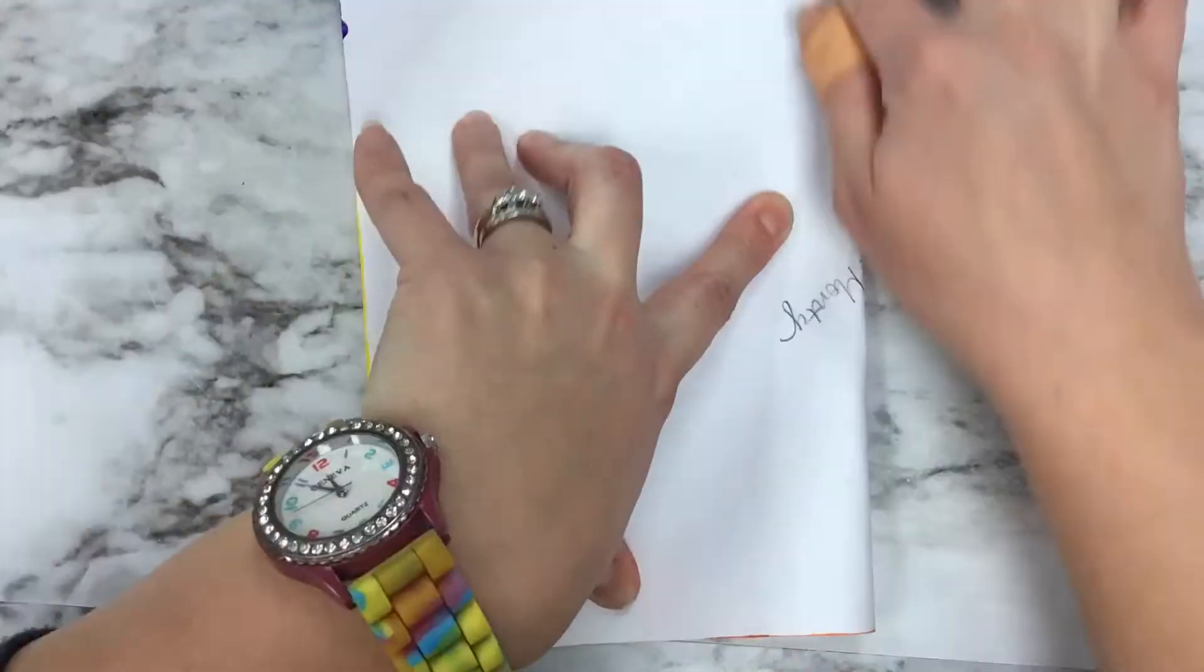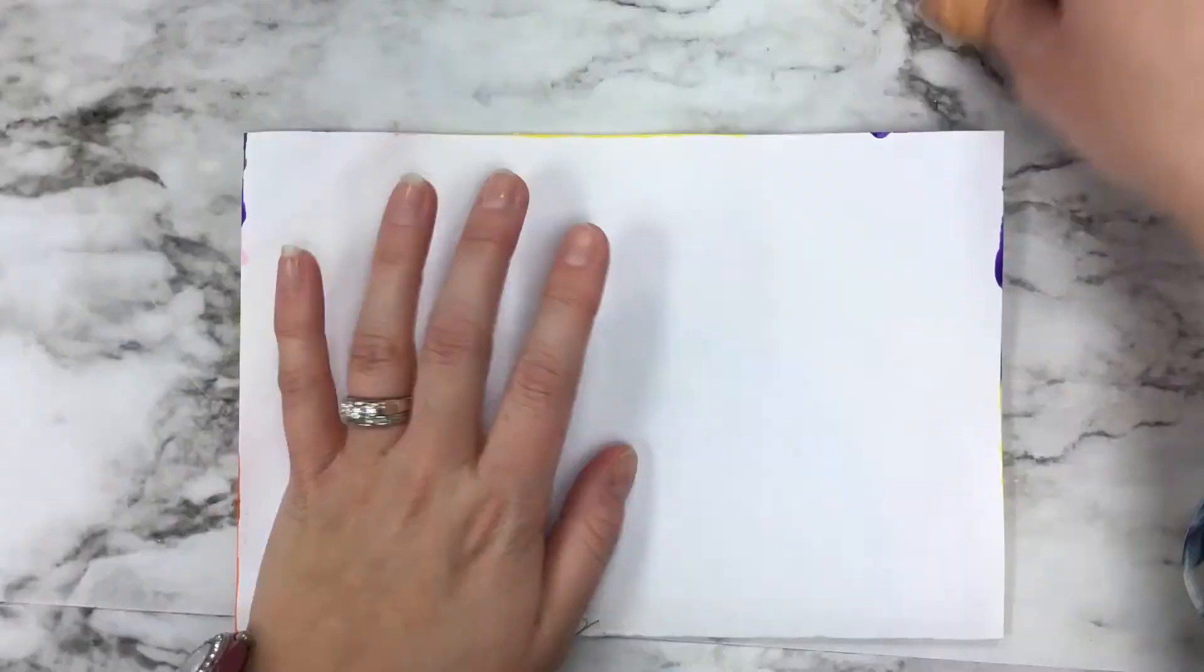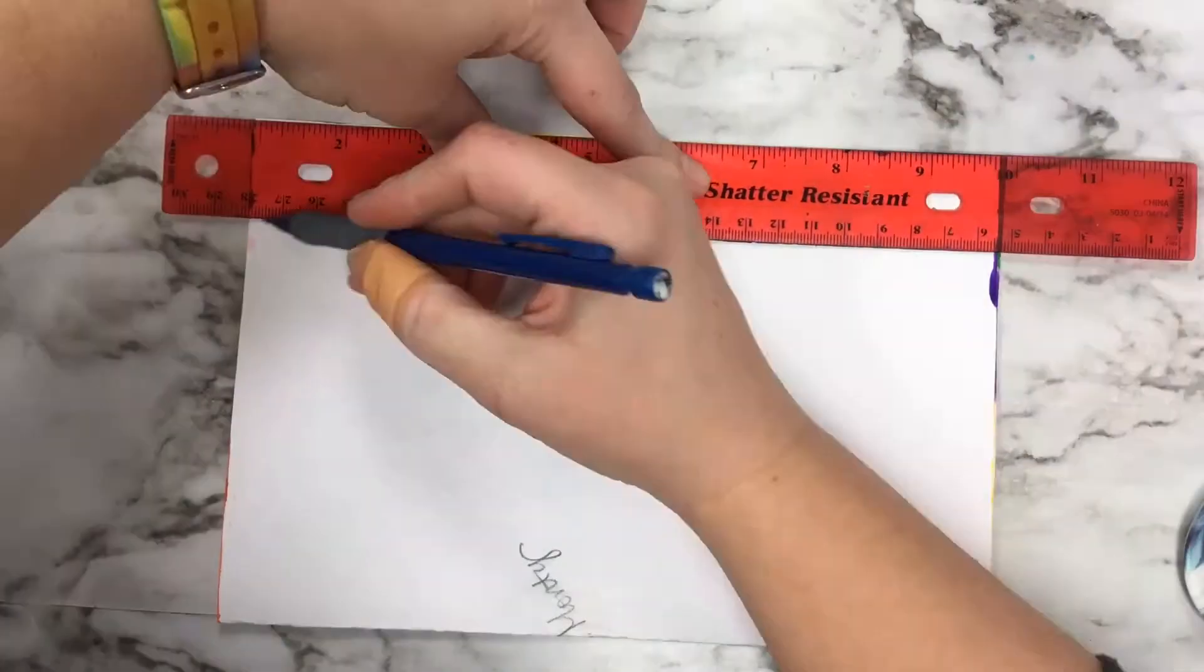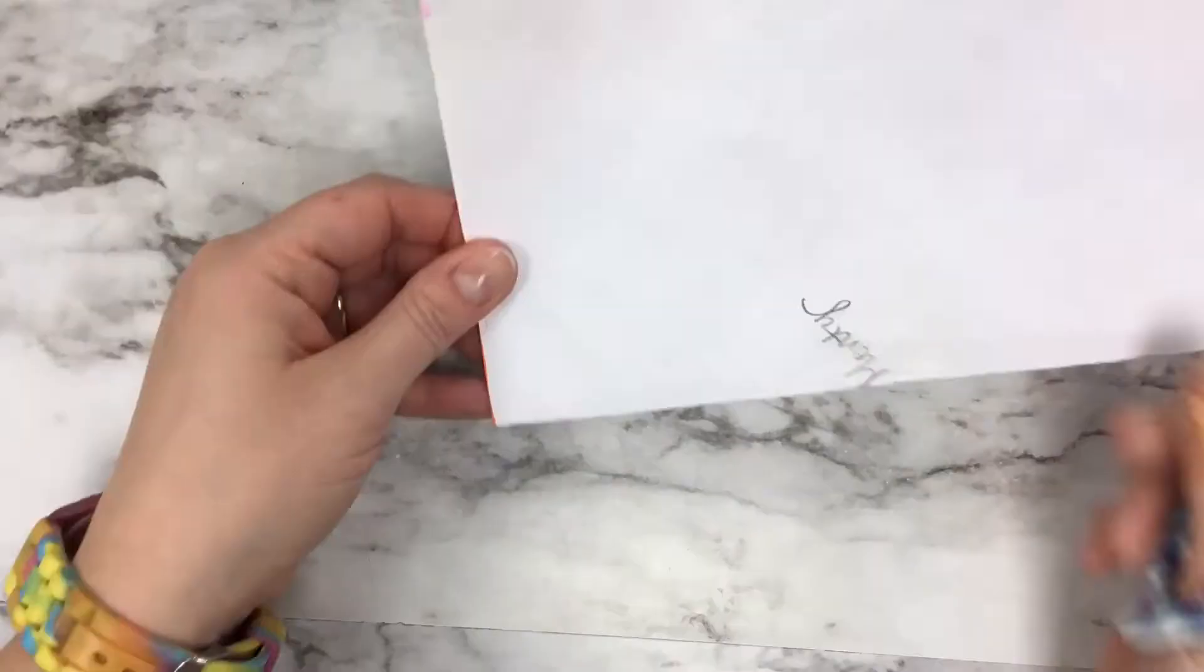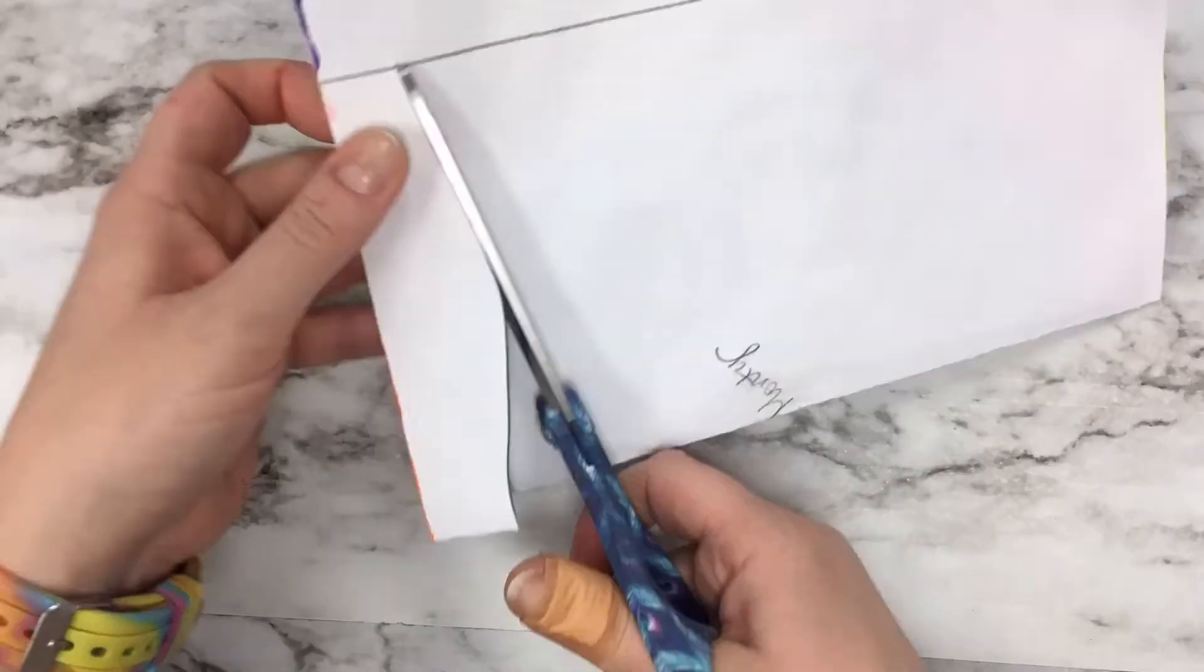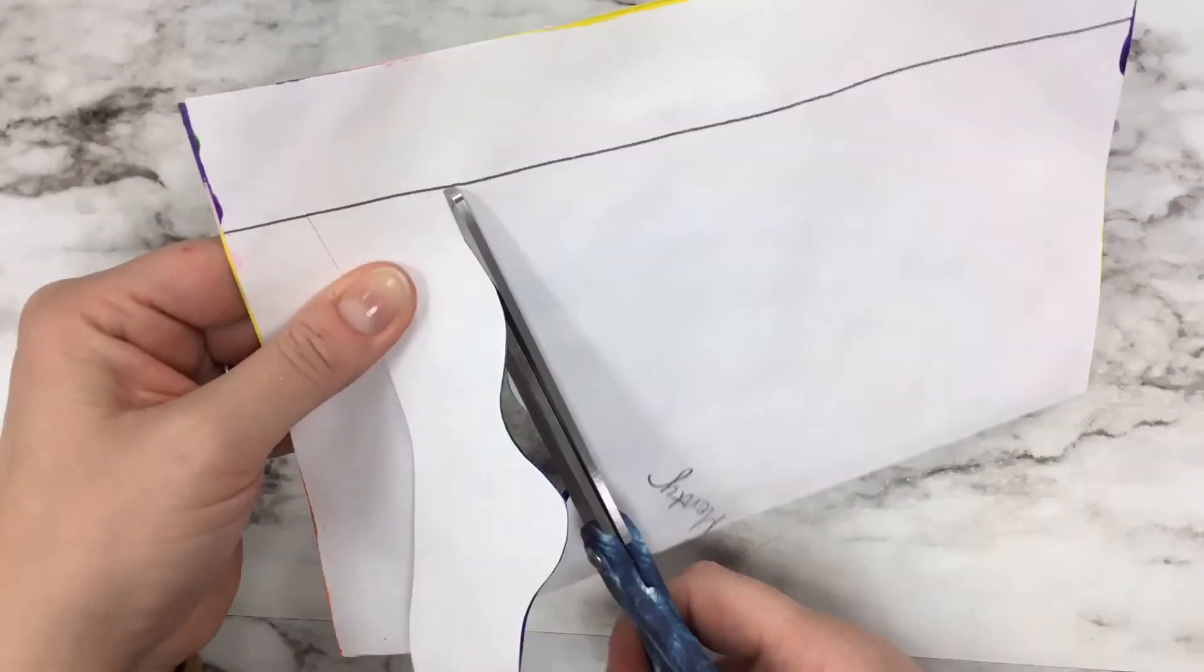Once our paper is dry, we're going to fold it in half and turn it into the loom. Take a ruler and line it up against the open edge of your piece of paper. This will be the line that you stop when you're cutting your strips.